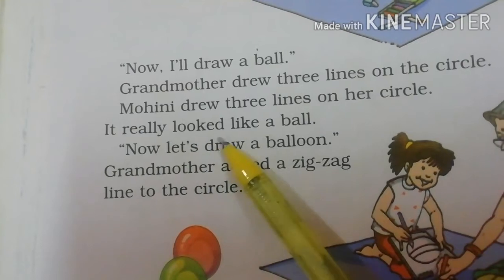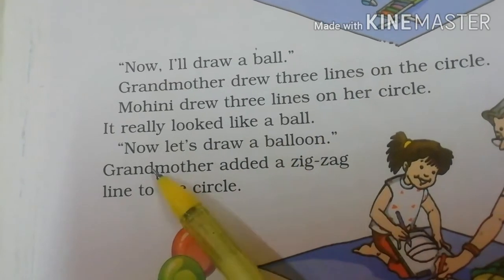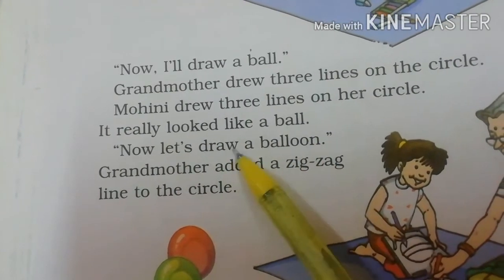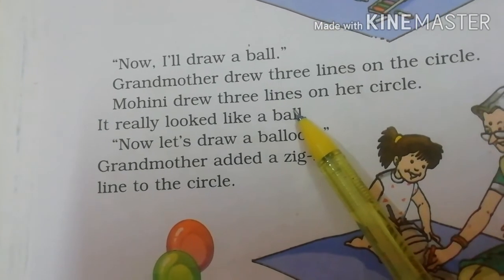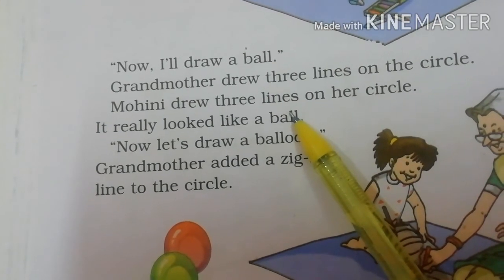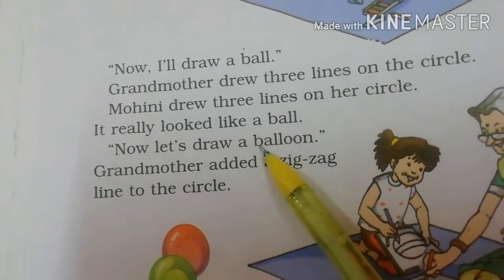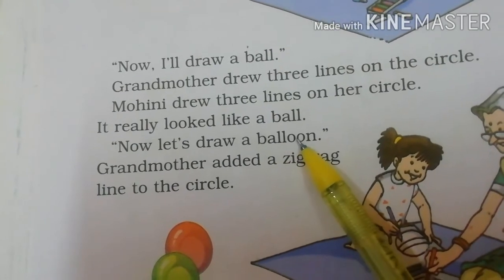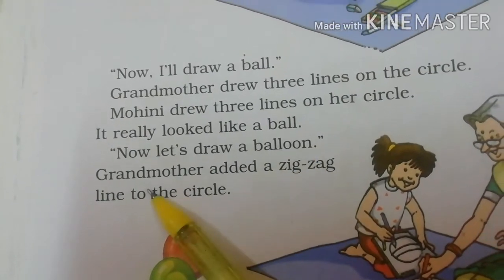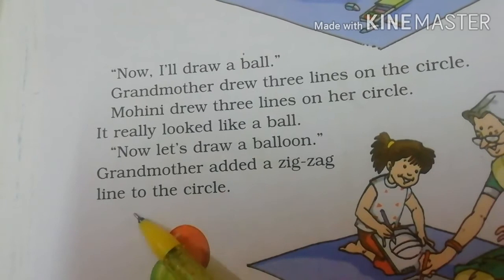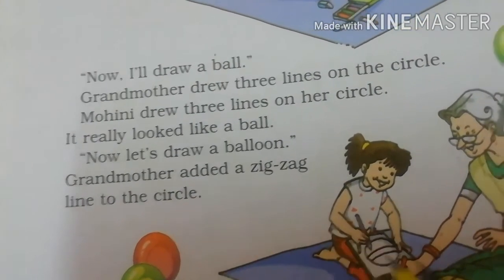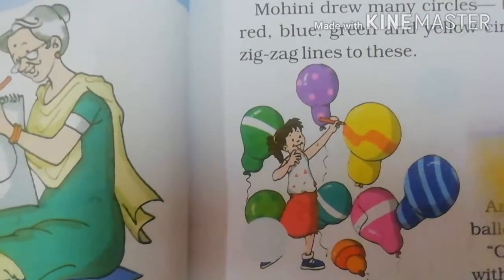It really looked like a ball. Now let's draw a balloon — Mohini ne bola. Aray, yeh toh sach mein ek ball ki tarah lag raha hai! Chalo ab hum ek balloon banate hain. Grandmother added a zig-zag line to the circle. Toh grandmother ne zig-zag line banakar us circle ko balloon bana diya.